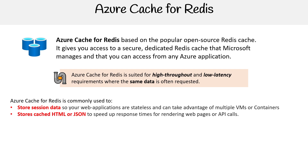Another use case is storing cached HTML or JSON — a very common way to speed up response times. There's also memdb, another caching solution specifically for HTML. But this is something you'd put in front of your web application to speed up web pages or API calls.